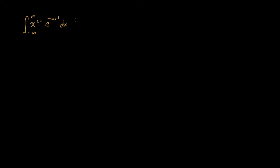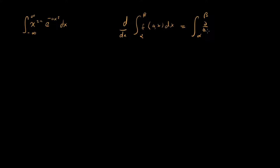So how are we actually going to solve this? We're going to use a trick called Leibniz's integral rule, or more colloquially, differentiating under the integral sign. The property states that if we take the derivative with respect to a of some integral from alpha to beta of a function of both a and x with respect to x, we can move the derivative inside the integral, because the integral and the derivative are with respect to different variables.